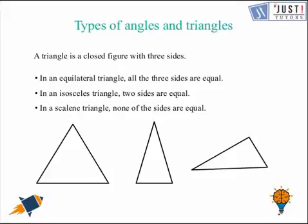Now, let's start with the triangles. A triangle is a closed figure with three sides. We are going to look at three types of triangles based on the length of their sides. The first one is equilateral triangle. In equilateral triangle all the three sides are of equal length.